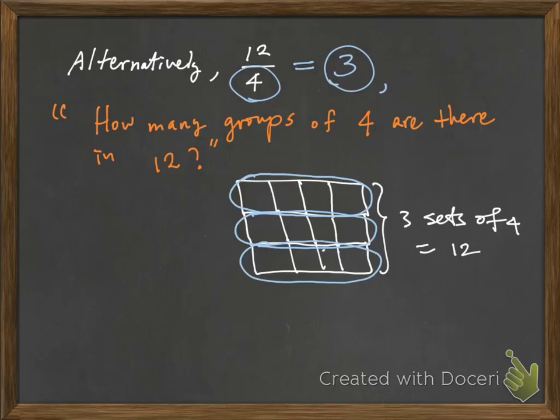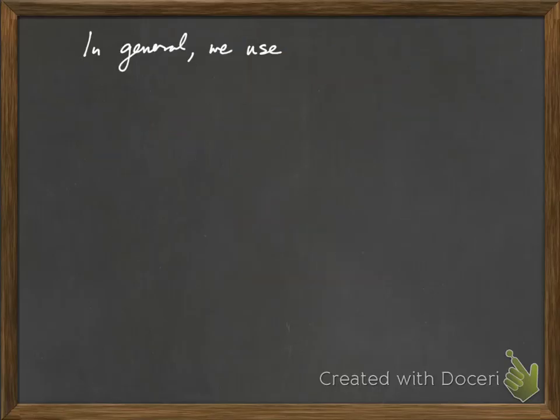Now you can see that this will always be the case that the number that you get over here, which in this case is 3, times the number in the denominator of that fraction, which is 4, should always give you the number that is on top of that fraction, 12. In general, we use the expression a divided by b to mean the number of b's in a.